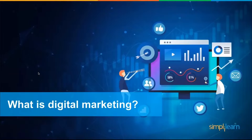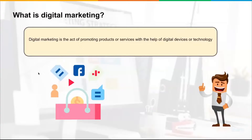Now that we've answered why digital marketing is important, let's talk about what digital marketing is. Digital marketing is the act of promoting a company's or individual's product or service with the help of a device or technology. When we talk about devices, we mean a laptop or a mobile device. When we talk about technology, it could be an app, a cloud-based platform, or a piece of software. In a nutshell, you're using technology to promote your product or service.